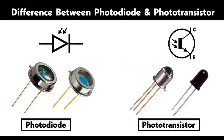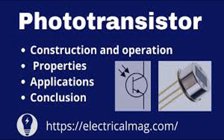Applications of phototransistors: Phototransistors are versatile devices used in a wide range of applications due to their sensitivity to light and ability to convert light into electrical signals. Optocouplers/optoisolators isolate different parts of a circuit electrically while allowing signal transmission via light — a phototransistor detects light emitted by an LED on the other side of the isolator. Used in power supplies, microcontrollers, and communication systems to provide isolation and prevent electrical noise from affecting sensitive components.